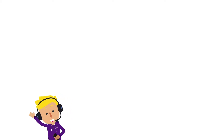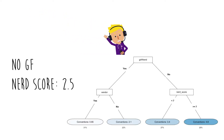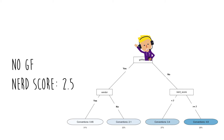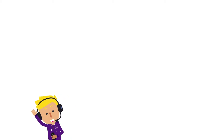Let's look at a real example with data. Meet Joe — Joe has no girlfriend and he has a nerd score of 2.5. Using this decision tree to predict how many conventions Joe has been to: because he has no girlfriend, he goes on the right side of the tree. Because his nerd score is 2.5, which is less than 7, we predict he has attended 3.4 conventions.